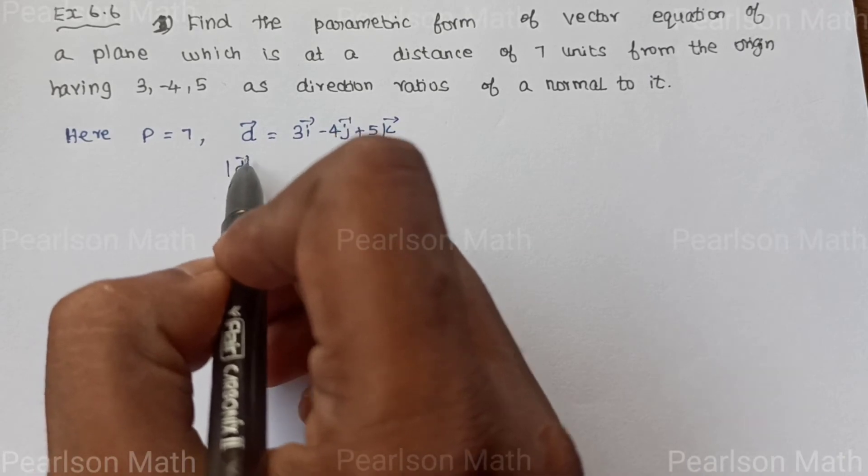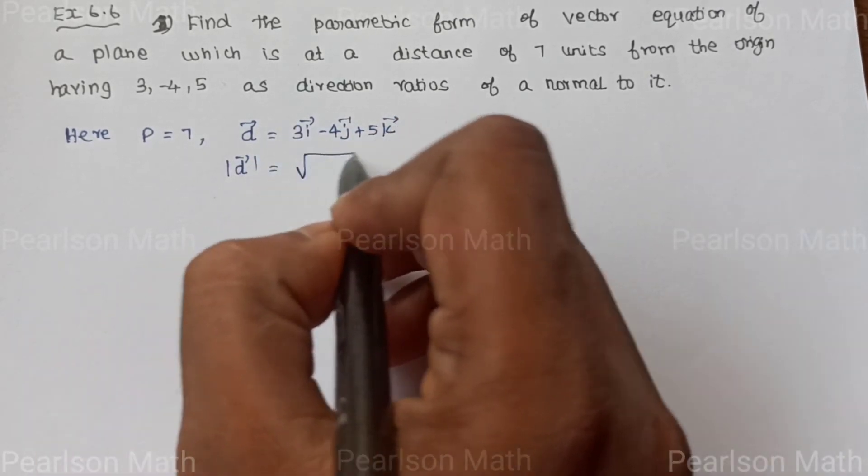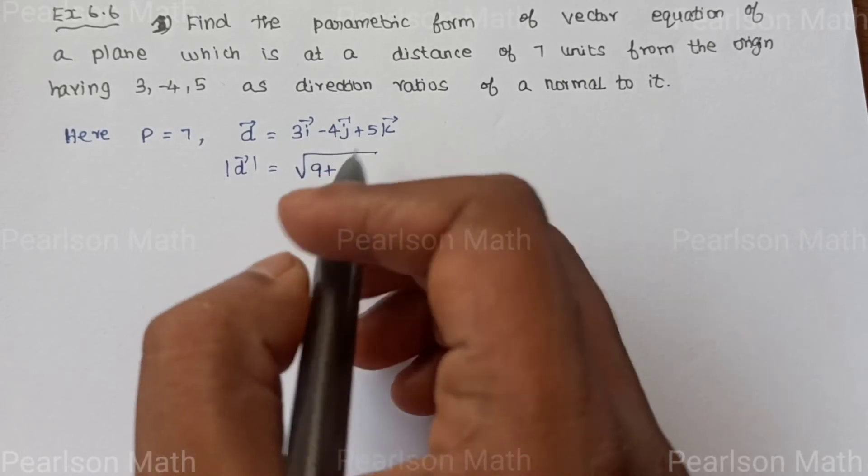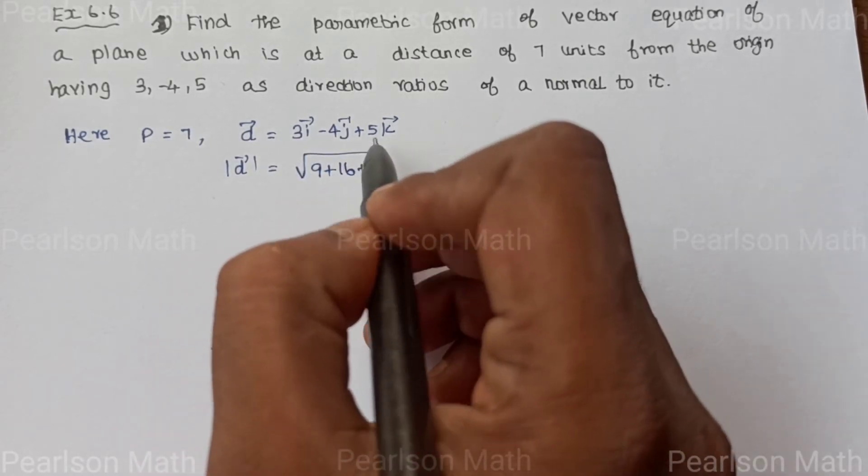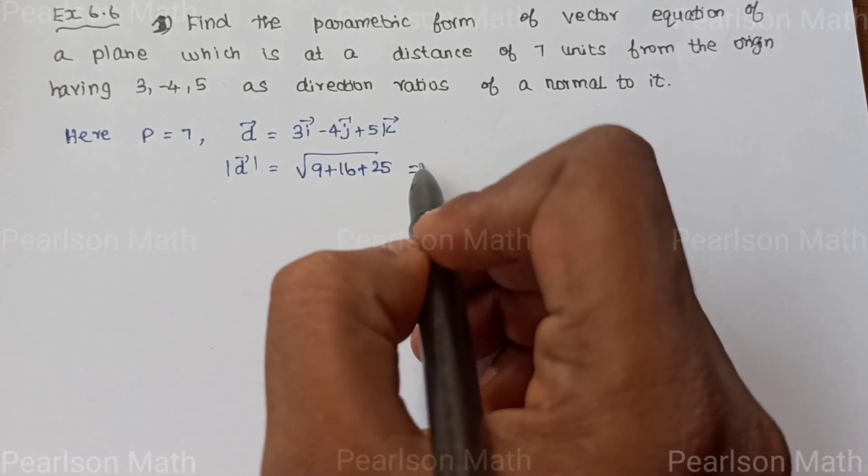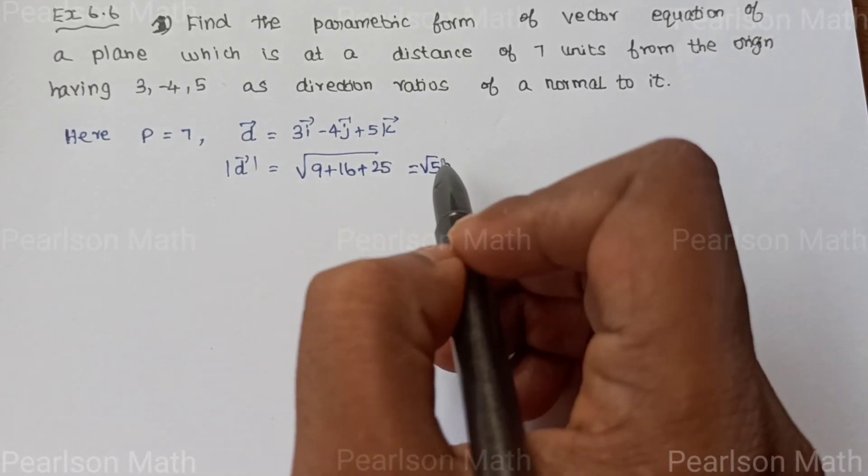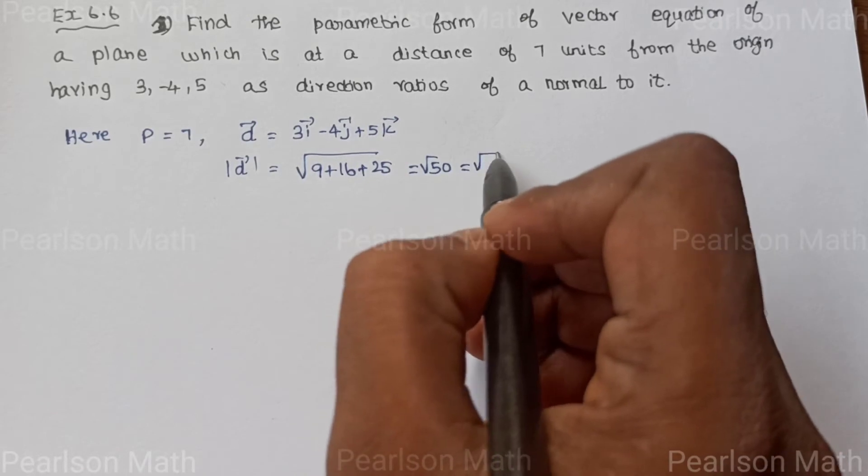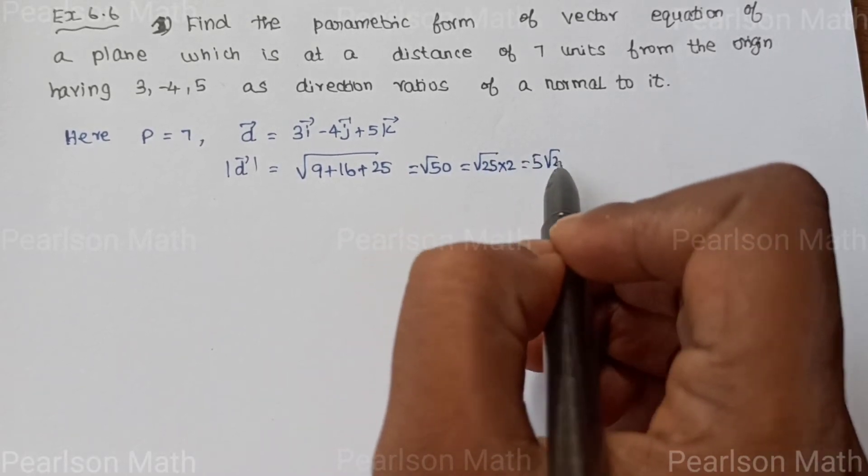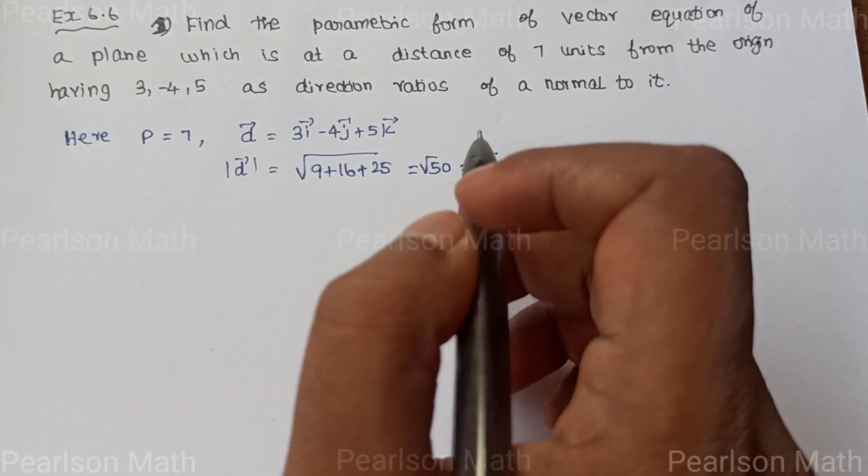Now, the modulus is equal to root of 3 squared is 9, minus 4 squared is 16, plus 5 squared is 25, equal to root of 50. Root 50 equals root 25 times 2. Root 25 is 5, so modulus of d is 5 root 2.